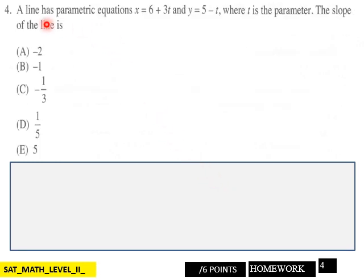Page 4, a line has parametric equations x equals 6 plus 3t and y equals 5 minus t, where t is the parameter. The slope of the line is one of these here. That's 6 points here for page 4.